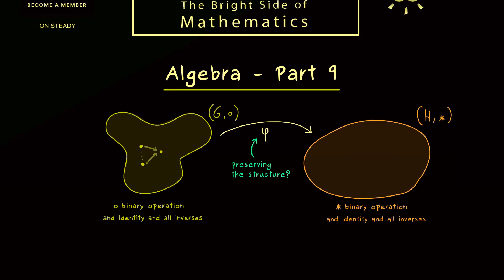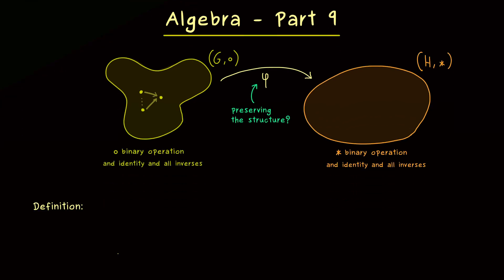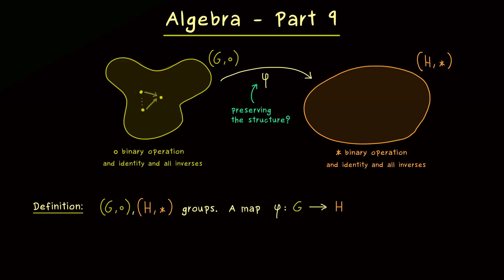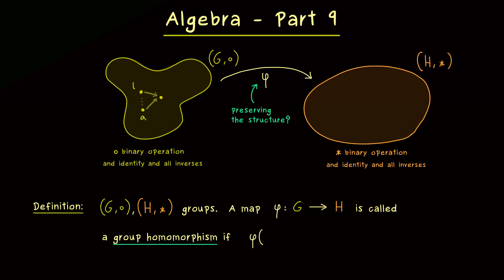So with this motivation we can go to the exact definition. It turns out that we don't need to require much to get such a structure preserving map. The only input we need here are two groups — let's call them G and H as before. And then we can just consider a map phi that sends the set G to the set H. So on the set level this is already well defined, but now we go to the group level.